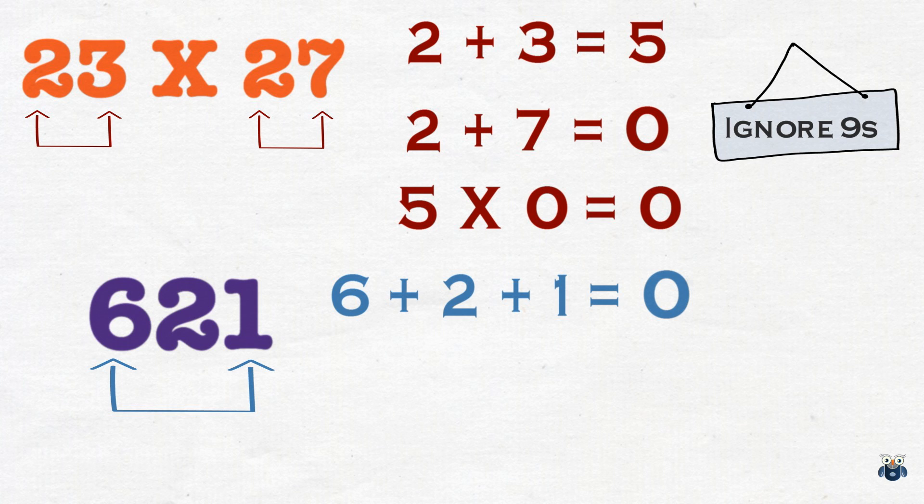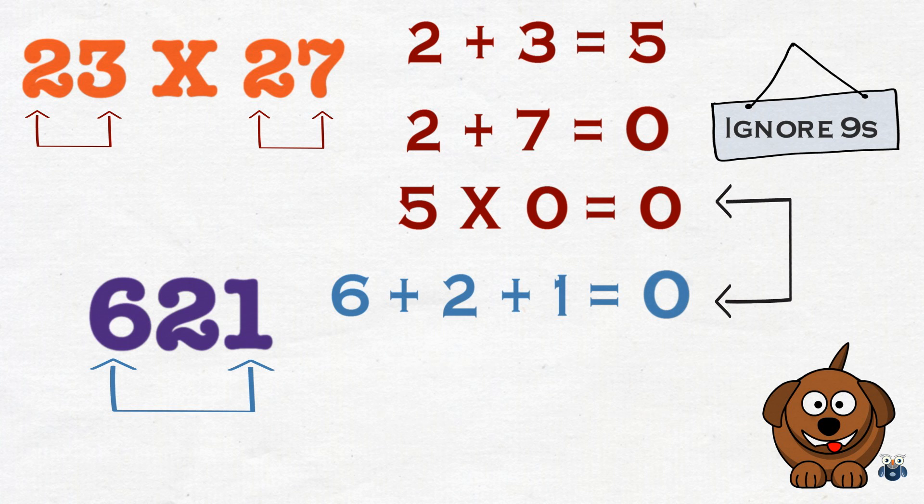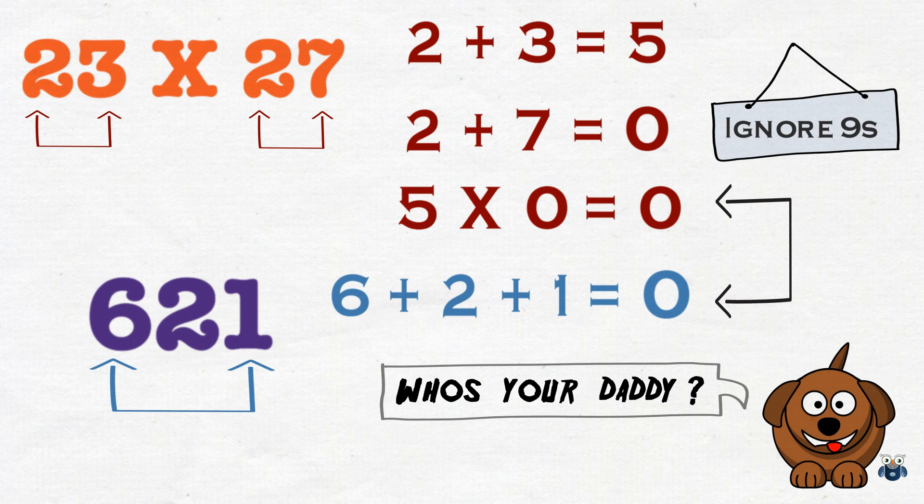So, after looking at 621, we get 0. This is our second result. Now, we compare both results. Hey, they are equal. Since both results are the same, we can be pretty sure that we multiplied correctly.